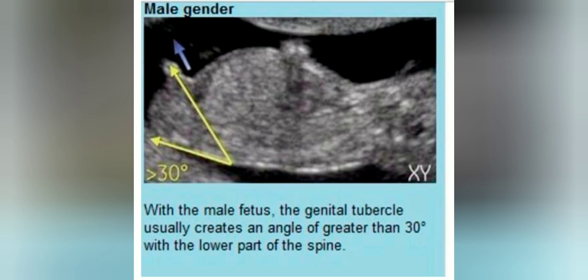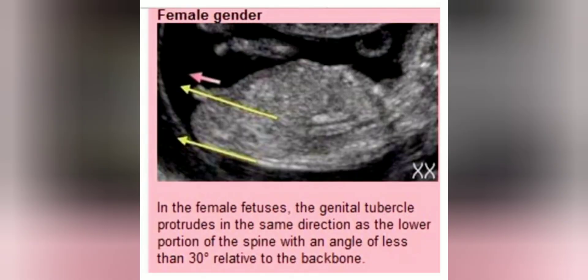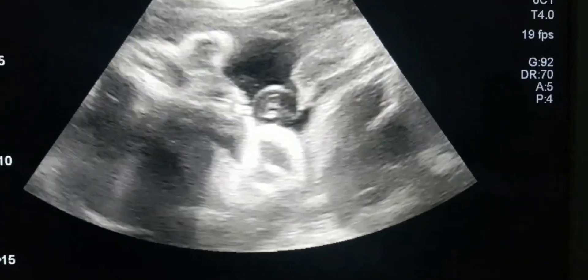If you are scanning at the end of the first trimester, you have to find the fetal spine and the genital tubercle. In male babies, the angle of the genital tubercle with the spine would be more than 30 degrees, and the direction of the genital tubercle would be opposite to the direction of the spine. While in female babies, the angle of the genital tubercle with the spine would be less than 30 degrees, and the direction of the genital tubercle would be downwards or towards the spine.